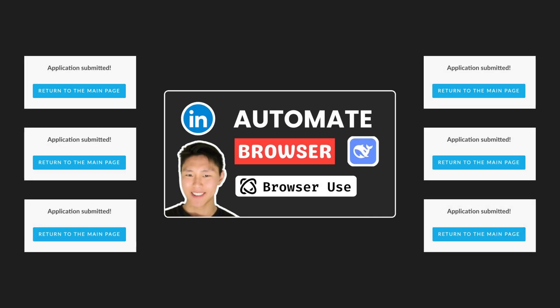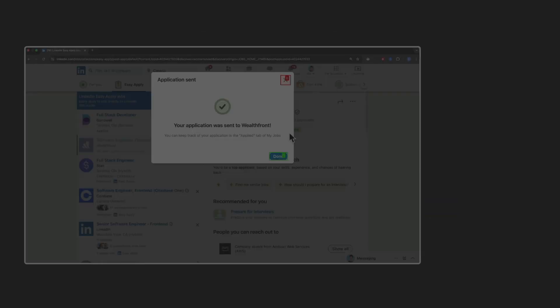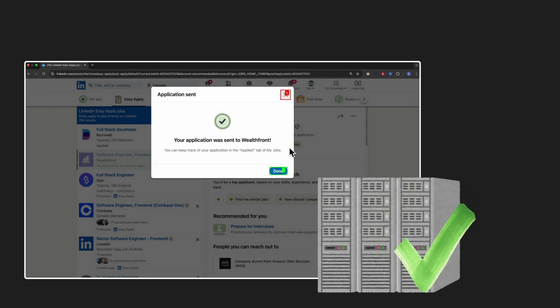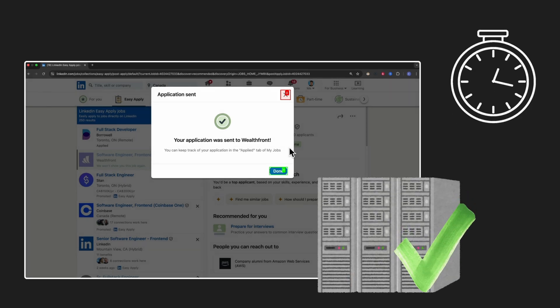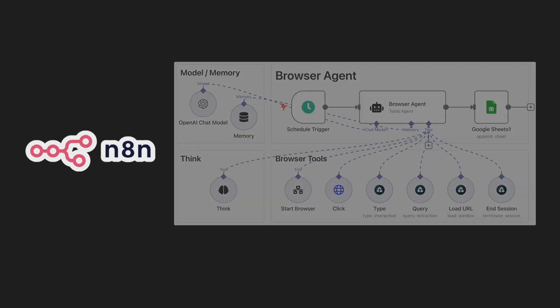In the last video, I showed you how to build a browser agent to automate our LinkedIn job search and job applications. But there was one big problem — it must be run on our local machine. But what if we can take this one step further and be able to run this remotely on a schedule without having to turn on our computer and manually run our browser agents? In this video, I'm going to show you exactly how to do that using NAN and a tool called Airtop to use AI to control our remote browser.